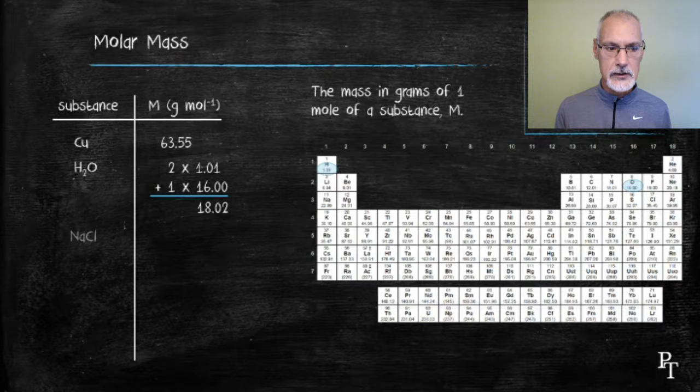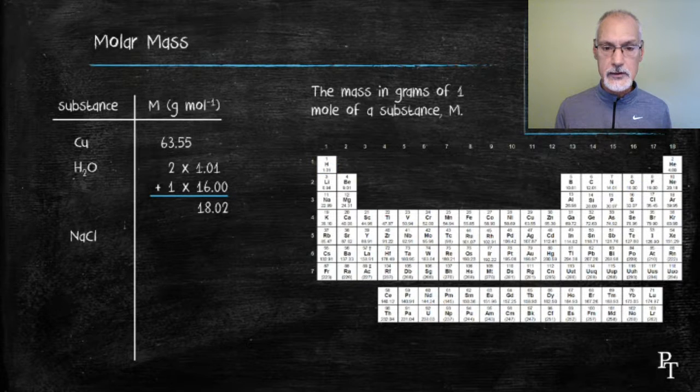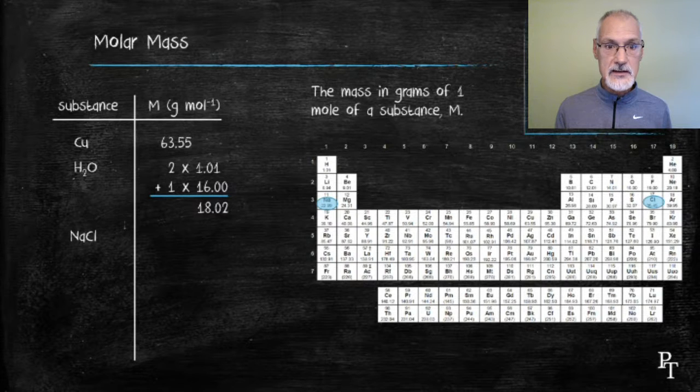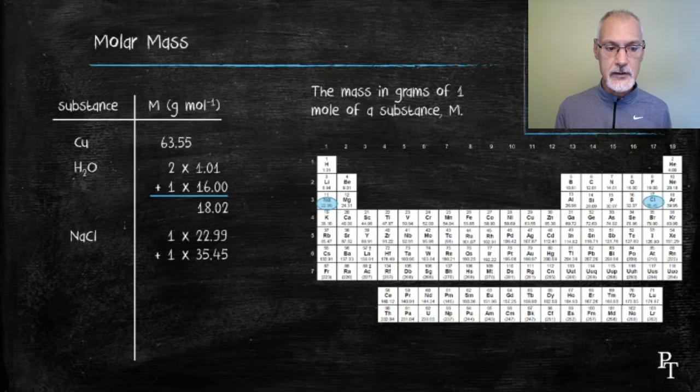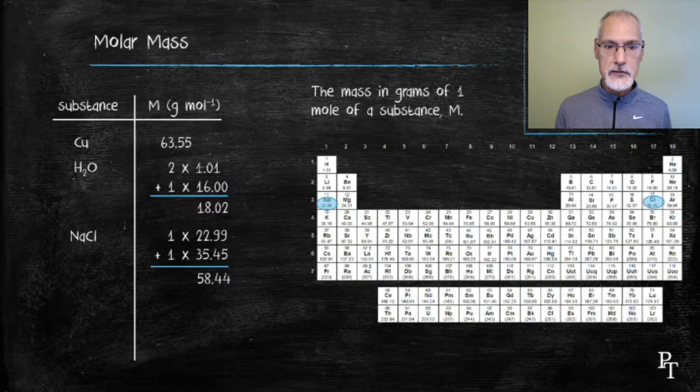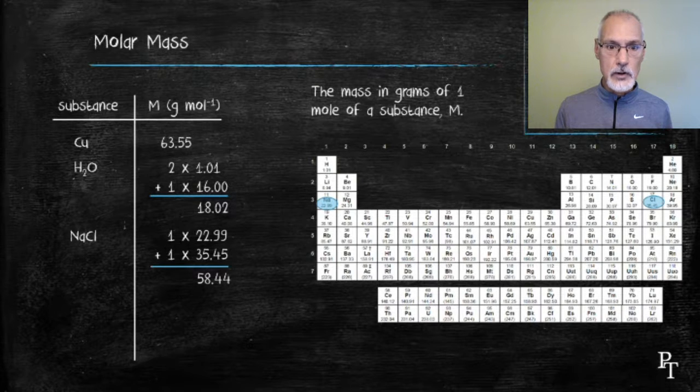What about table salt? One mole of table salt. So again, I consult the periodic table, finding both sodium and chlorine. Being that I have one of each present, I add those together, and I would need 58.44 grams of table salt to have one mole of NaCl formula units.